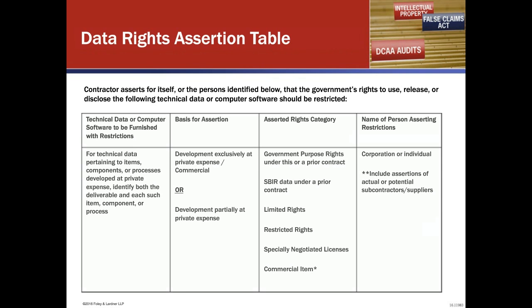We recommend you include commercial items in the asserted restrictive rights category to put the government on notice. In the first column, you describe the technical data and computer software — it's an art more than a science. You could identify specific drawing numbers or certain parts of drawings. You could have a drawing where certain parts are subject to unlimited rights and some more subject to limited rights. However you want to do it, if you want to describe it more generally — 'technical data relating to this process' — the more general you get, the more pushback you're likely to see from the government.